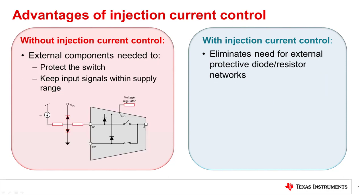To protect a device without injection current control from injected current events, multiple components need to be added to the system, increasing cost and size. A network of diodes and passive components is needed at every input of the device that is vulnerable to injected current. In addition, an external voltage regulator is needed at the power supply rail to ensure supply rail stability. Implementing a switch with injection current control eliminates the need for these external diode resistor networks.